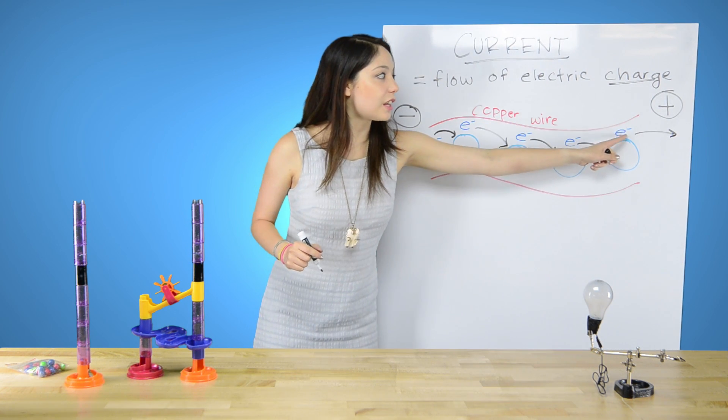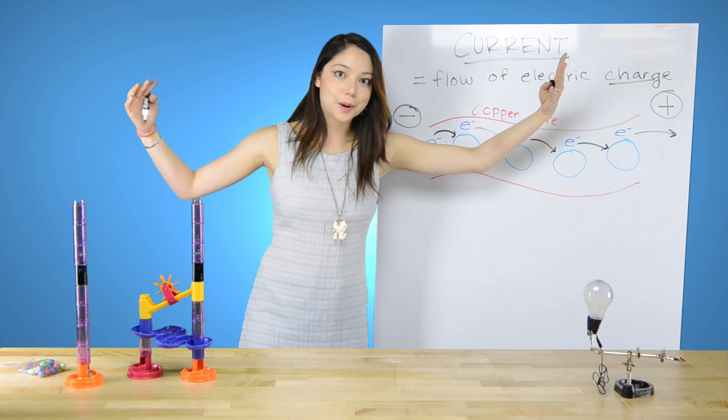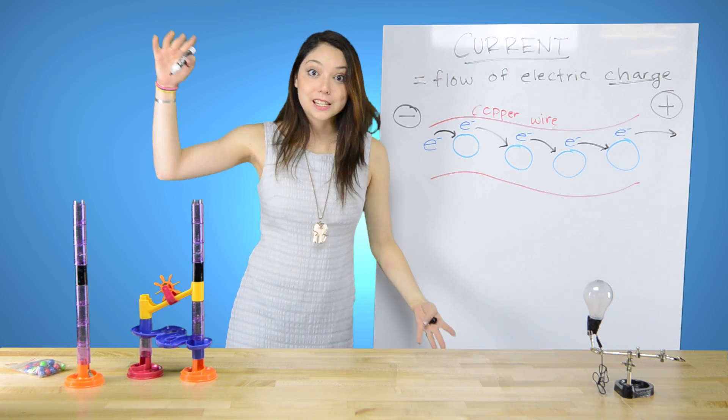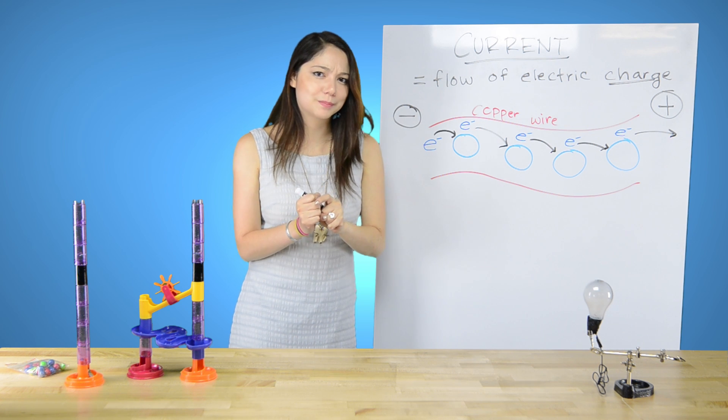And this is the positive end of the wire over here. And that's why this electron is attracted to positive, because remember, opposites attract. Same thing as dating, really. Opposites attract.